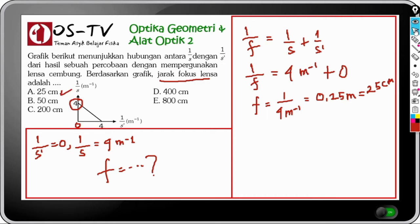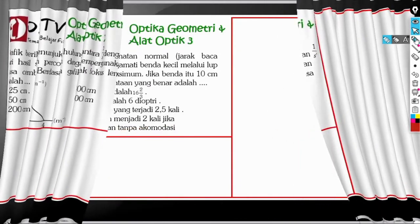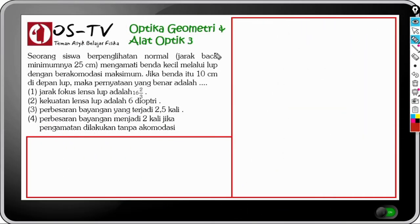Kita lanjutkan pada contoh soal untuk optika geometri dan alat optik nomor 3. Disebutkan bahwa seorang siswa berpenglihatan normal dengan jarak baca minimum 25 cm mengamati benda kecil melalui lup dengan berakomodasi maksimum. Jika benda itu 10 cm di depan lup, maka yang ditanyakan adalah: jarak fokus lensa, kekuatan lensa, perbesaran bayangan saat akomodasi maksimum, dan perbesaran bayangan saat mata tanpa akomodasi.